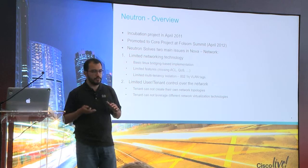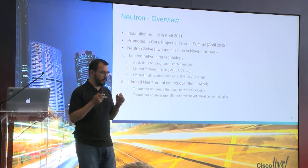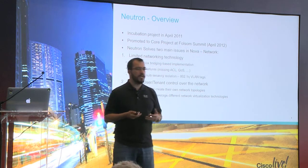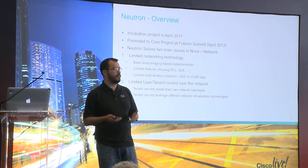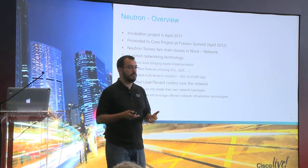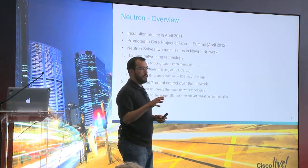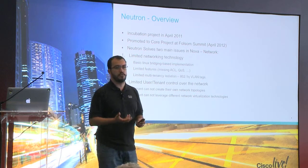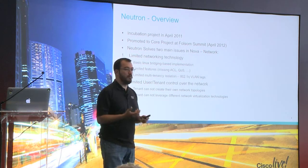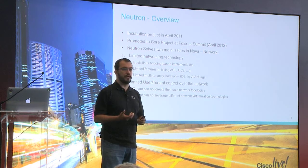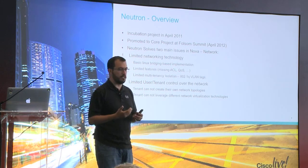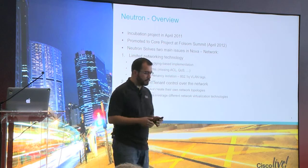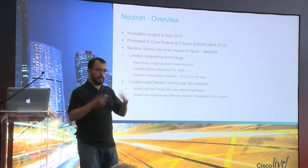The idea behind Neutron was to solve two basic problems. The compute part had a mechanism to connect VMs called Nova Network, but it was very basic — the only isolation mechanism was VLANs, which was not scalable. The other problem was that all networking operations were owned by the cloud operator, meaning tenants couldn't create their own network topologies. We wanted to give tenants the power to create complex network topologies — switching, routing, and advanced layer 4 to layer 7 services like firewalls and load balancing. Because of these two limitations in Nova Network, we created Neutron.